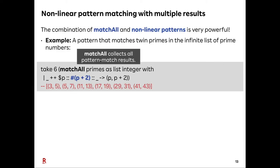Non-linear patterns are very powerful when combined with match-all. Match-all is our pattern-matching construct that collects all pattern-matching results. Here, we demonstrate a pattern that matches twin primes in the infinite list of prime numbers. $p matches a prime number, and the value pattern #(p+2) matches the next prime number. If the next prime is p+2, it succeeds in pattern-matching.